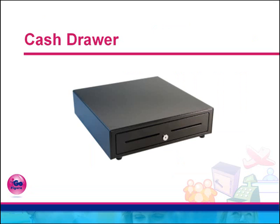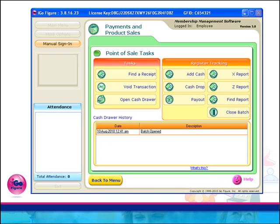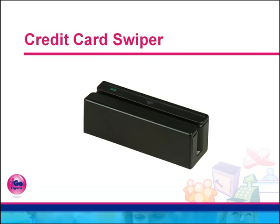Finally, an enhanced series of point-of-sale functionality, including hardware, has been added to version 3.8. A cash drawer is optionally available, which electronically integrates with your software. iGoFigure will open the cash drawer for you any time that a cash sale is made, can optionally be set to open any time that a check sale is made, and can be manually opened at any time simply by clicking the appropriate button in the Point of Sale Tasks screen.